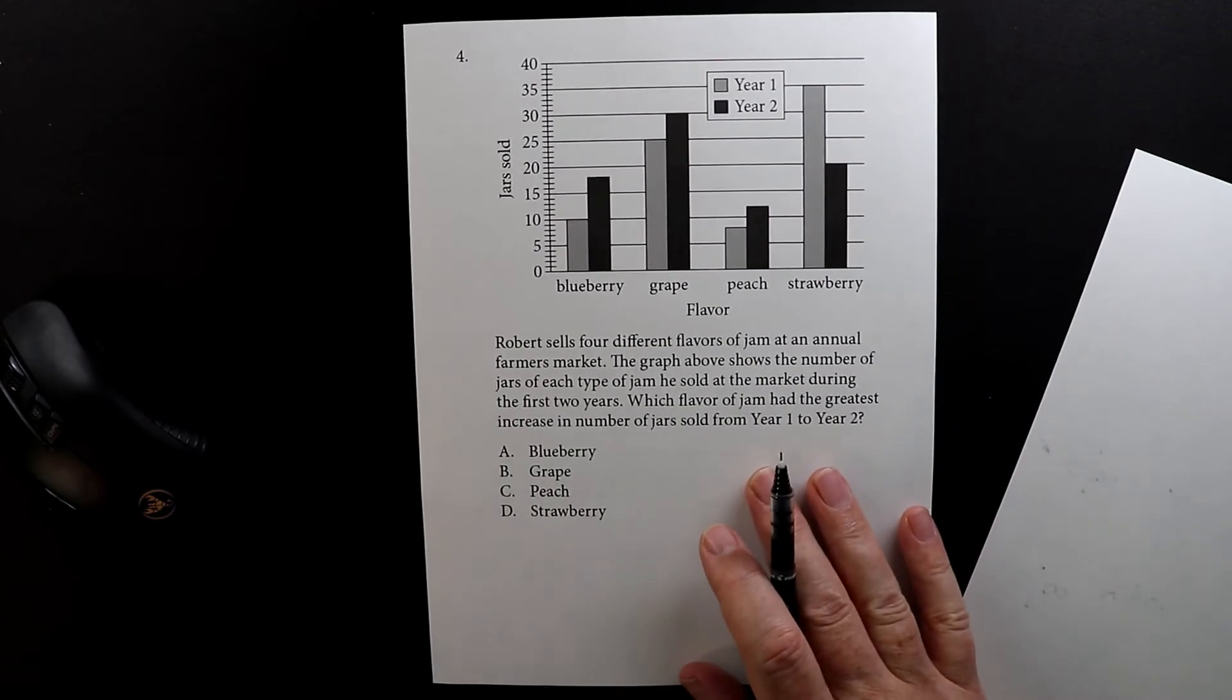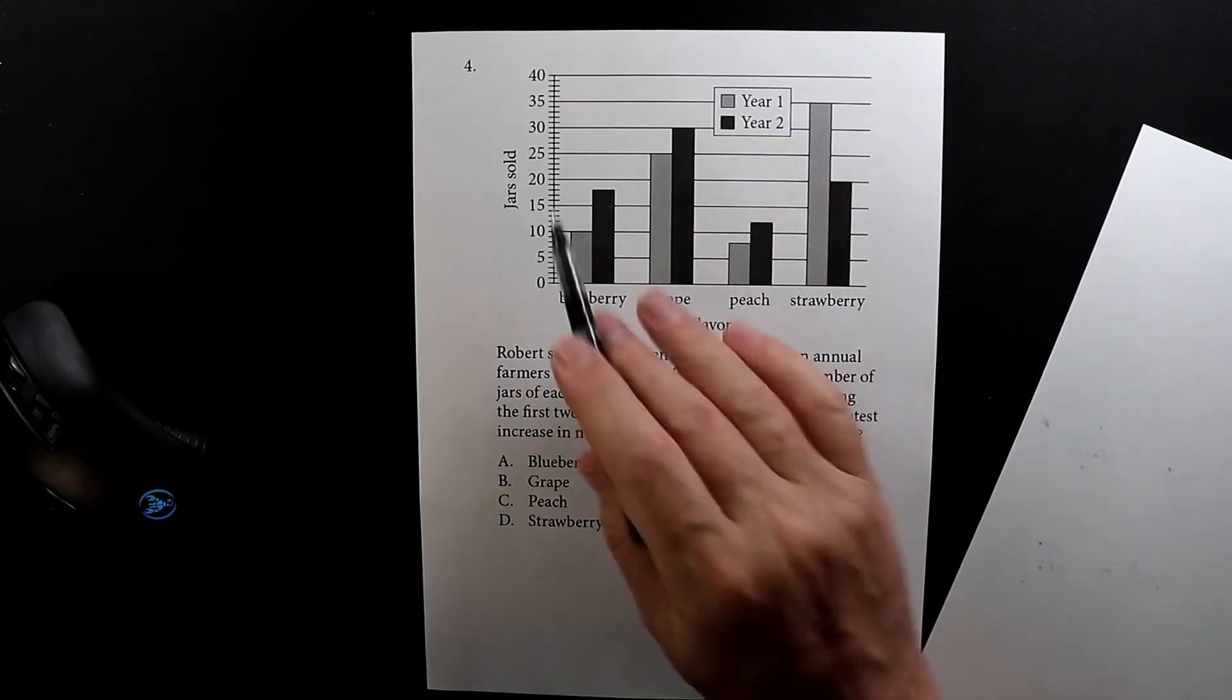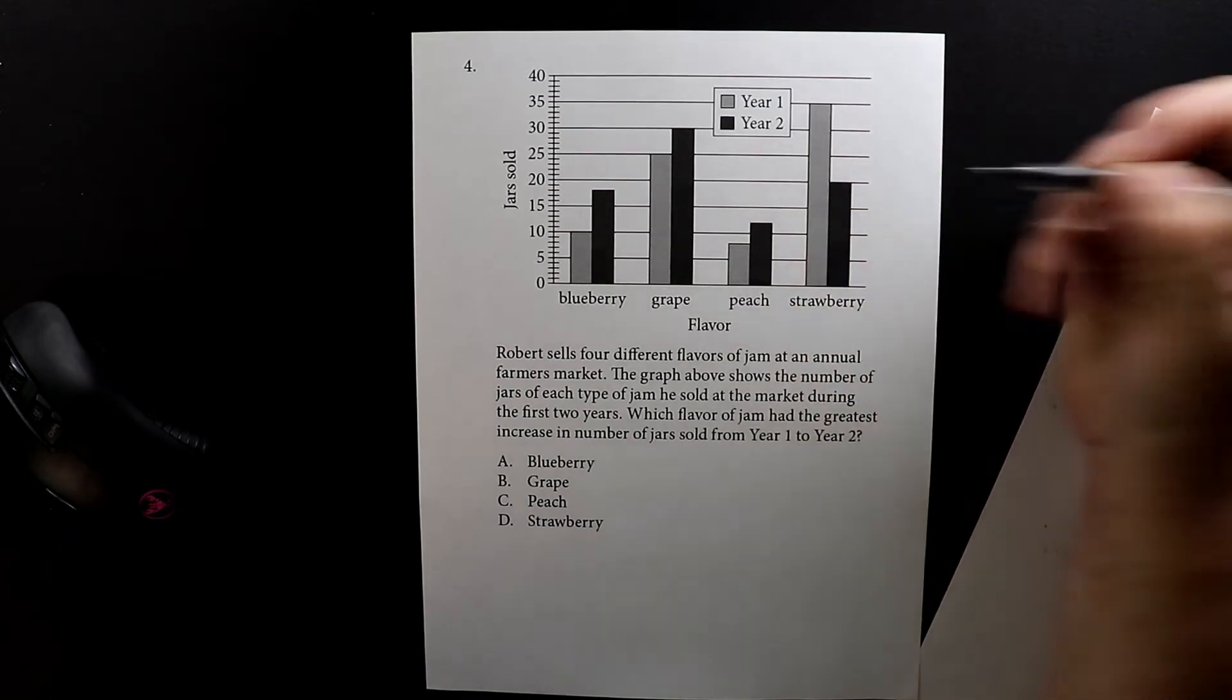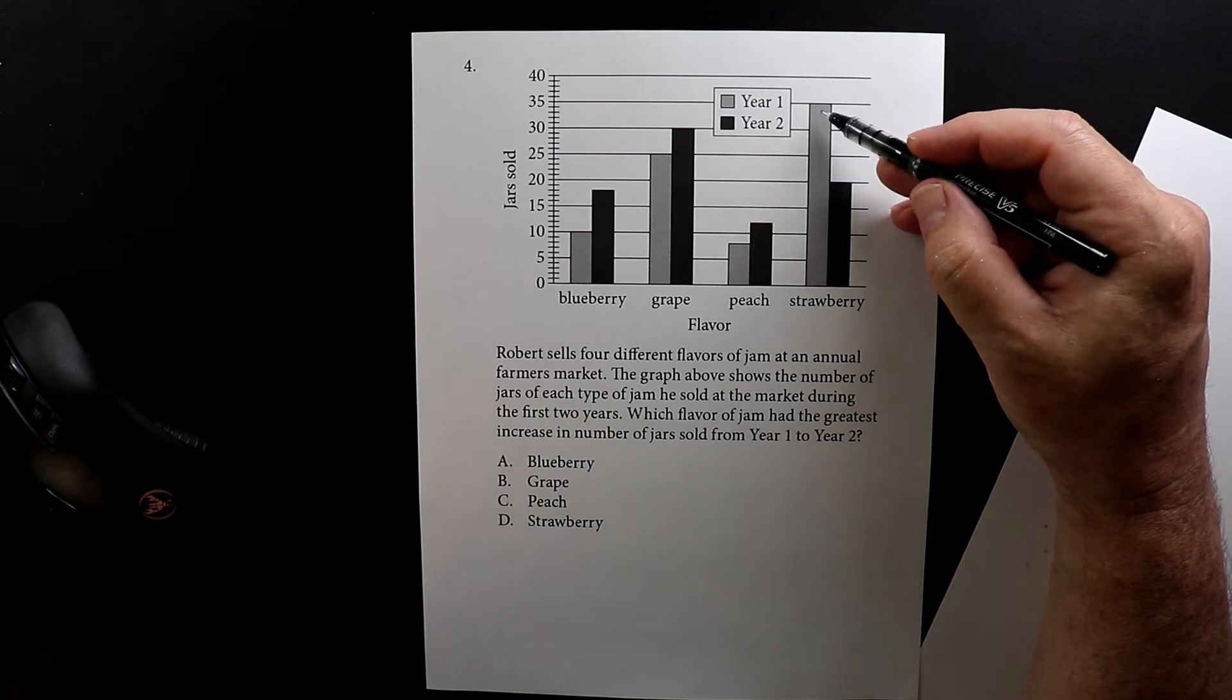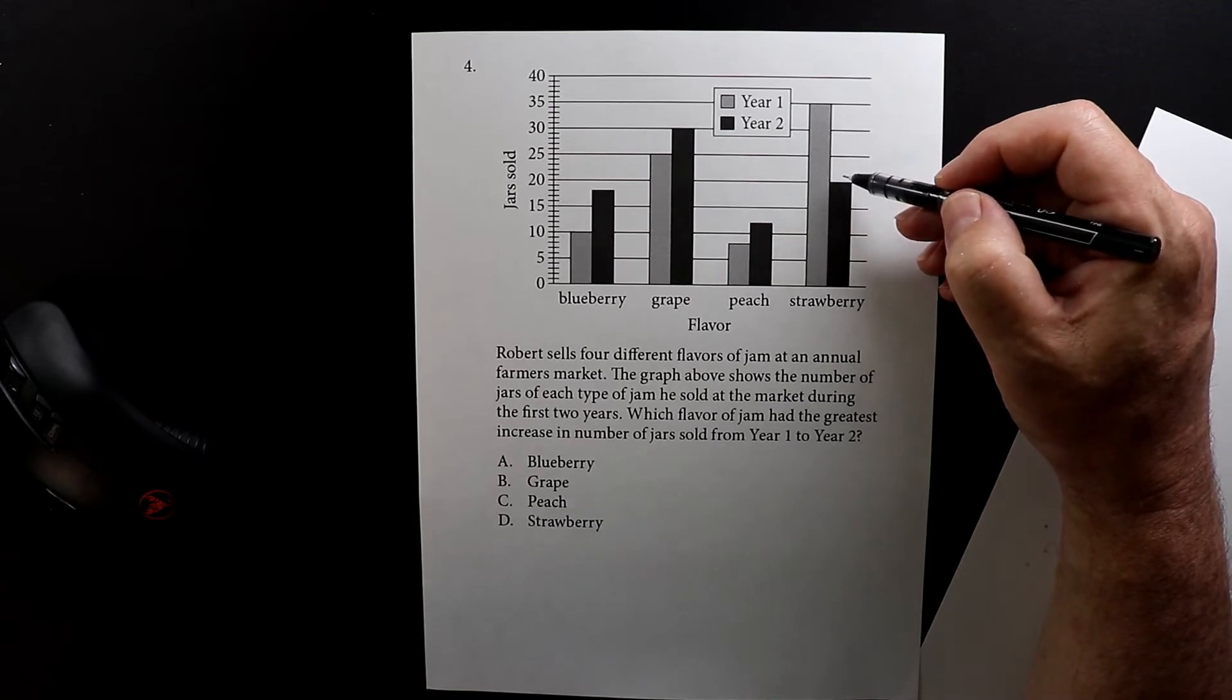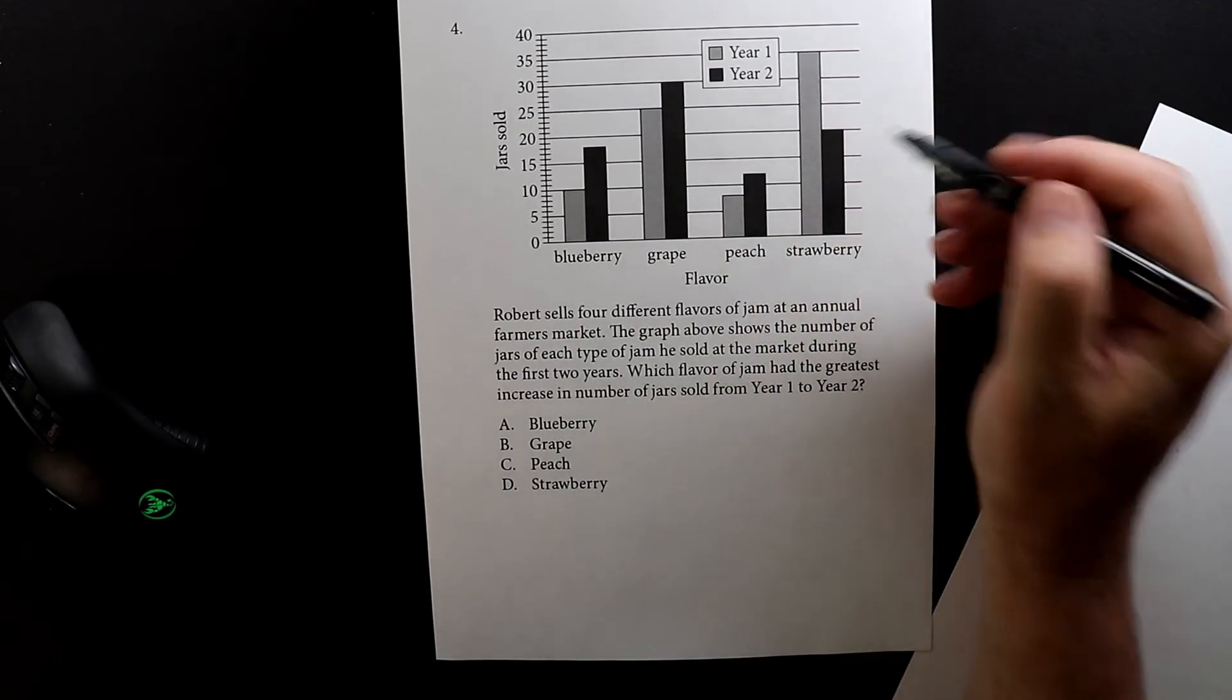And then this was a weird one for strawberry jelly. He sold 35 jars in the first year and then the second year he only sold 20. So he went from 35 down to 20. So I guess the people that bought it the first year tasted it, didn't like it, and then when they came back the next year they said I'm not buying that. So this is a decrease, so we know right away that it's not going to be strawberry. Strawberry is not the right answer because it decreased and they're looking for increase.